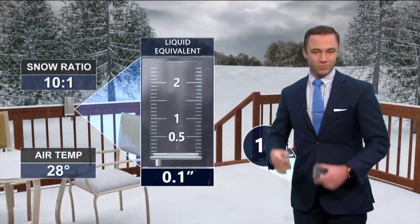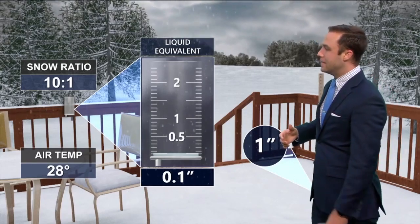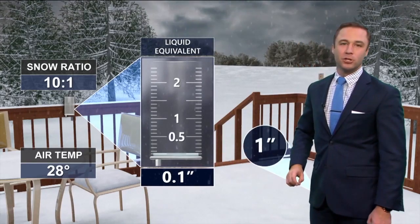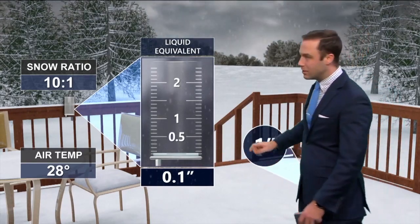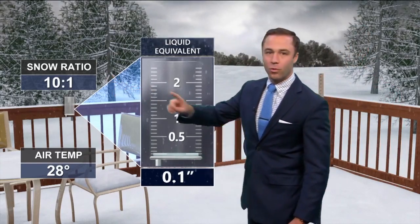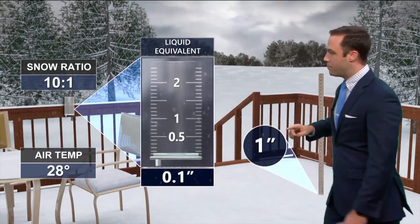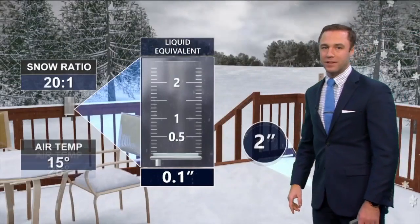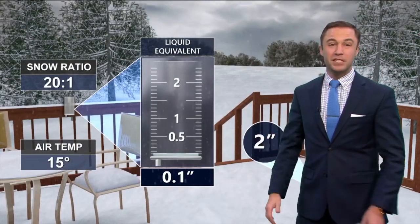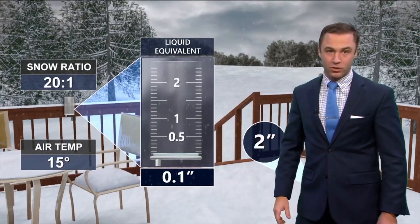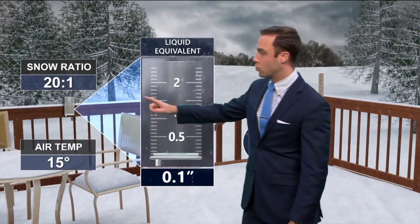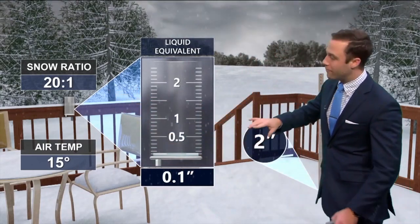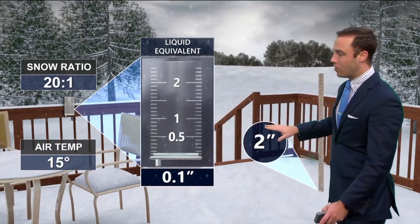Let's take another example. Let's say you have a tenth of an inch of rainfall forecast and your air temperature is 28 degrees — that'll give you a snow ratio of 10 to 1. You do that math, and look at that: an inch of snowfall forecast. Now let's say the temperature is even colder — it's 15 degrees outside while it's snowing. That gives you a ratio of about 20 to 1, and with the exact same amount of liquid, you now have 2 inches of snowfall.